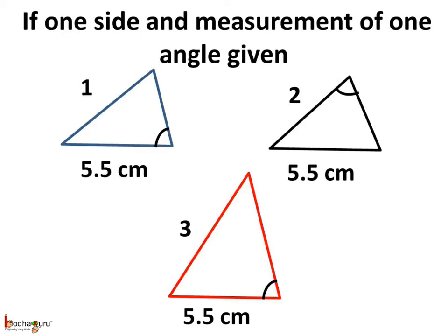Now say you are given the measurement of one side and one angle — 5.5 cm as a side and one angle of 65 degrees. Triangle 1, triangle 2, and triangle 3 each have a side equal to 5.5 cm and an angle of 65 degrees. And as we can see, all three of these are different.